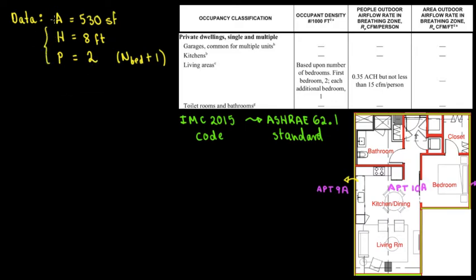That's the only data we need. And based on this data, area, height, and number of people, now we're able to calculate the outside air CFM. So the formula.